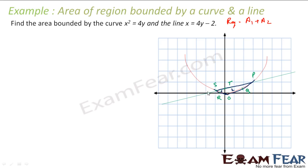Finding these two areas is not straightforward either. What I can do is find one big area and then subtract a smaller area. So let me draw lines and label the key points: let's call them P, Q, R, S, T, Y, and Z, with O at the origin.